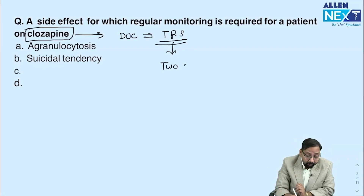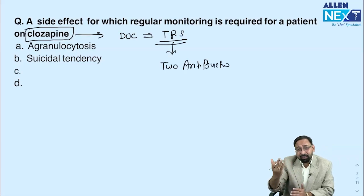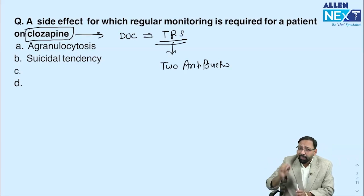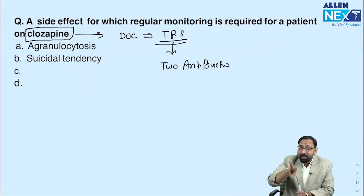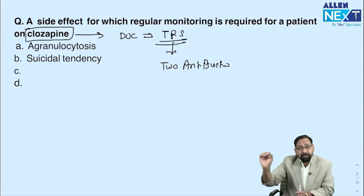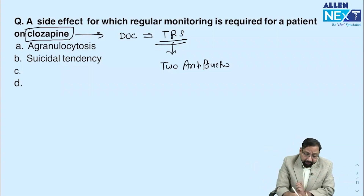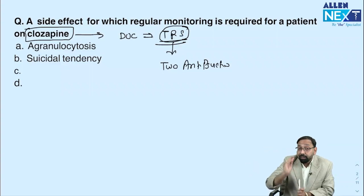When we say treatment-resistant schizophrenia, it means two antipsychotics have been tried and failed. For example, a patient with typical schizophrenia symptoms is started on olanzapine. After four to six weeks with no improvement, the drug is changed to haloperidol, and again no improvement after four to six weeks. This is treatment-resistant schizophrenia, and we start clozapine.